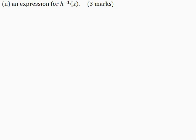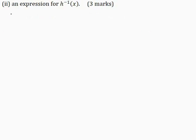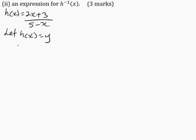Part 2: determine an expression for h inverse of x, for 3 marks. h of x is equal to 2x plus 3 all over 5 minus x. I'll let h of x be equal to y. So y is equal to 2x plus 3 all over 5 minus x.